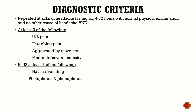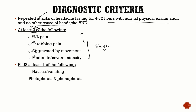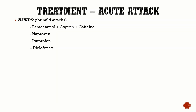The diagnostic criteria for migraine require repeated episodic headache attacks lasting 4 to 72 hours, a normal neurological examination, no other cause of headache, at least two of the following: unilateral pain, throbbing quality, aggravated by movement, moderate to severe intensity, plus at least one of: nausea or vomiting, and photophobia and phonophobia.